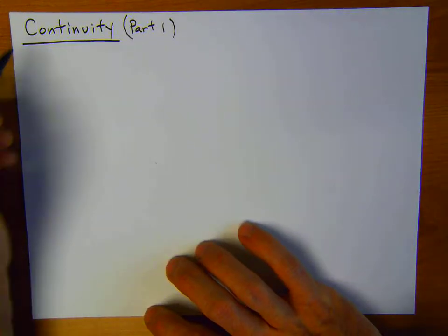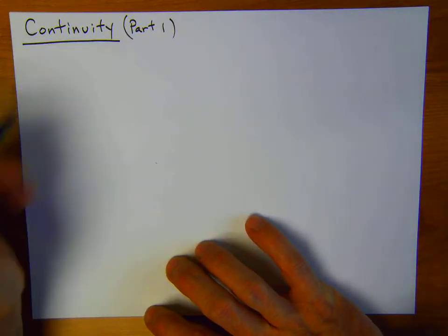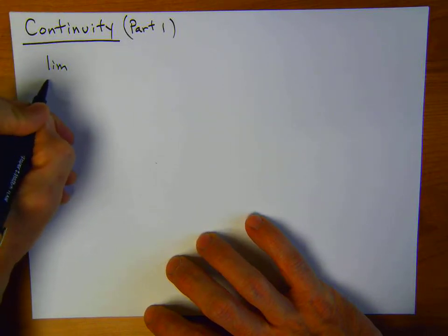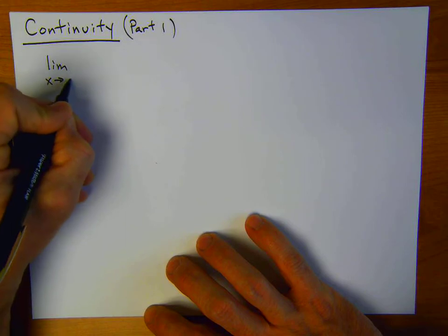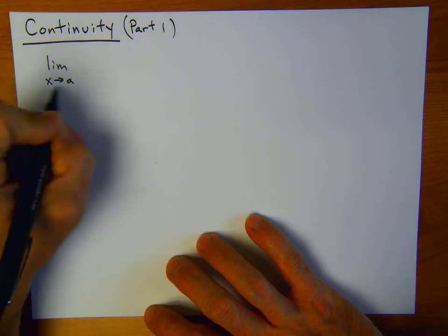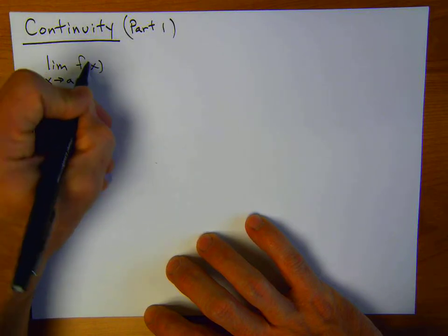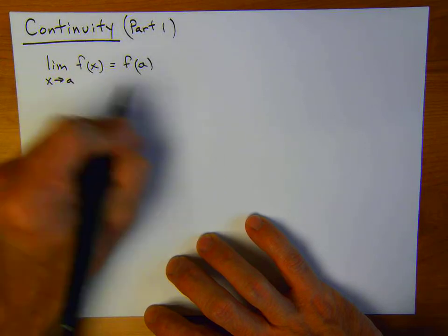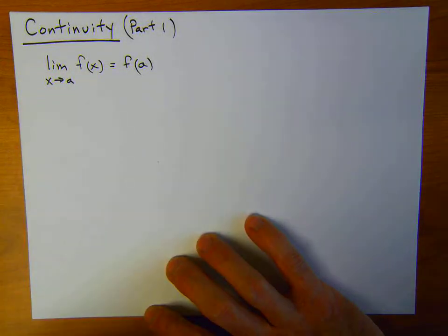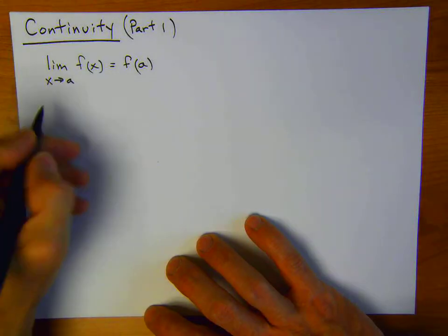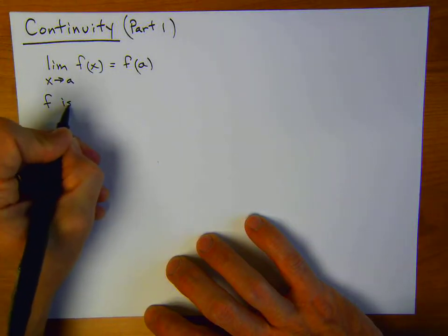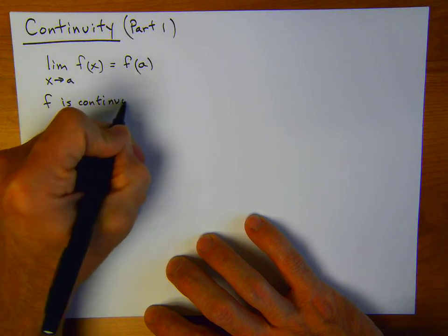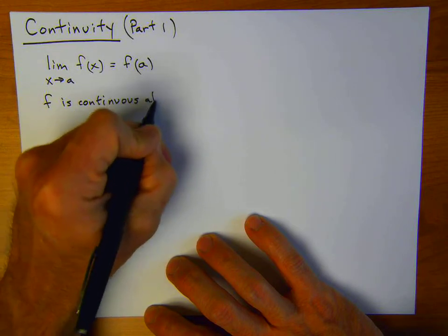In this video, I'm going to talk about continuity of a function at a point. Look at the limit — we've already discussed limits. We're taking the limit as x approaches a of f of x, and basically continuity says that if the limit is the same as the function value, then we say that f is continuous at x equals a.